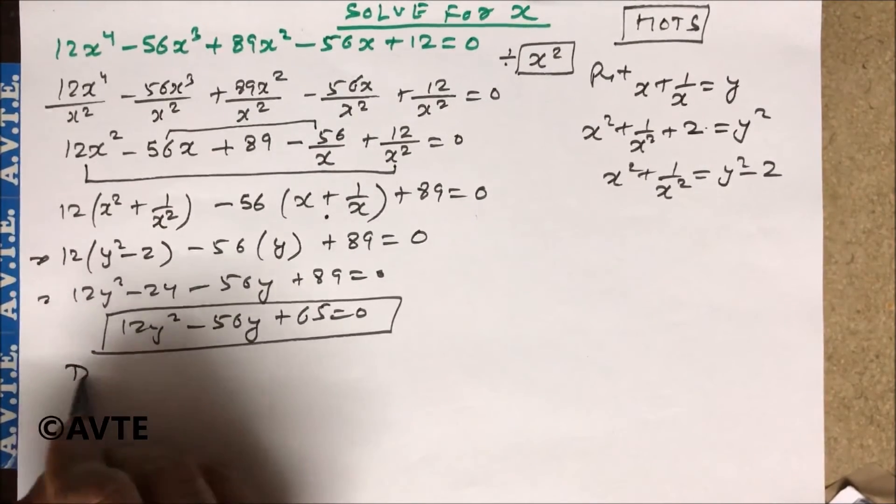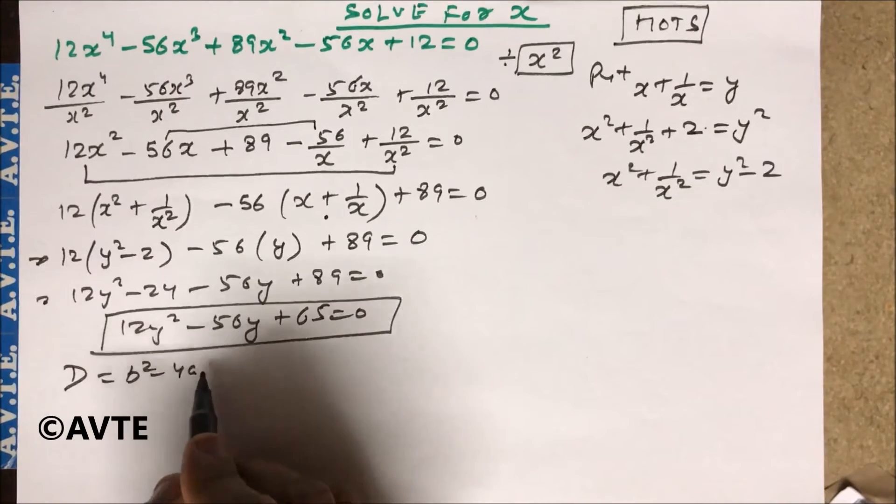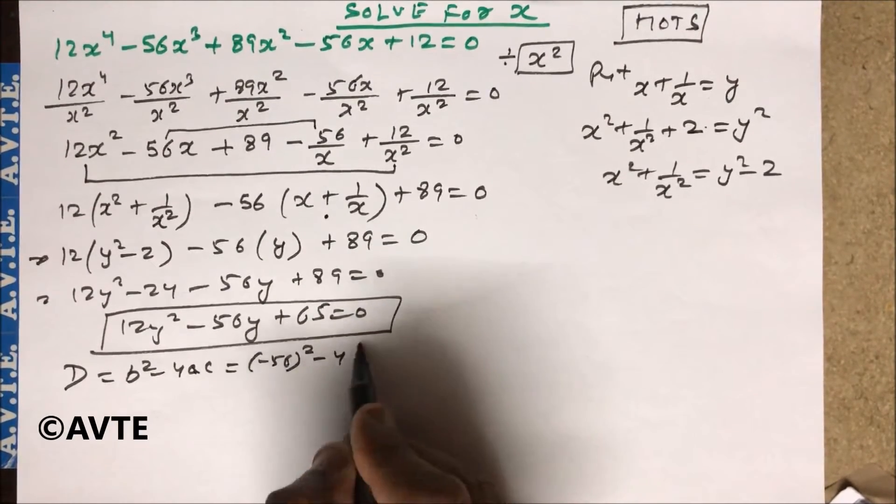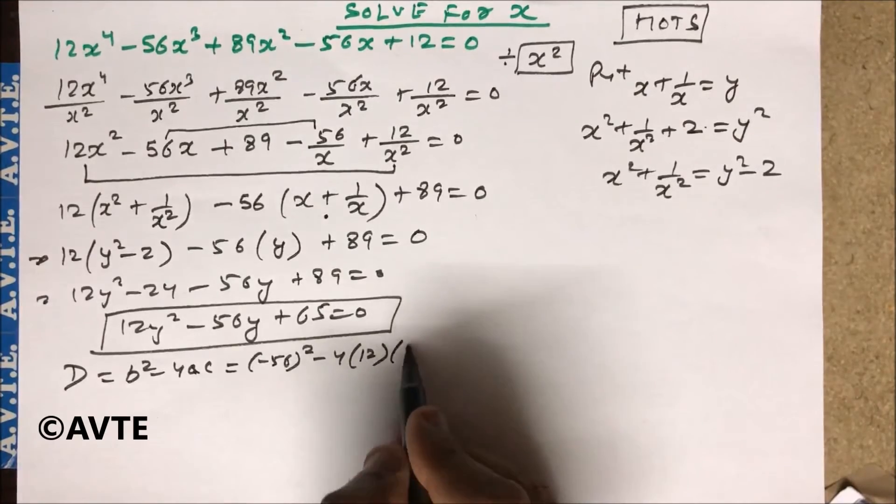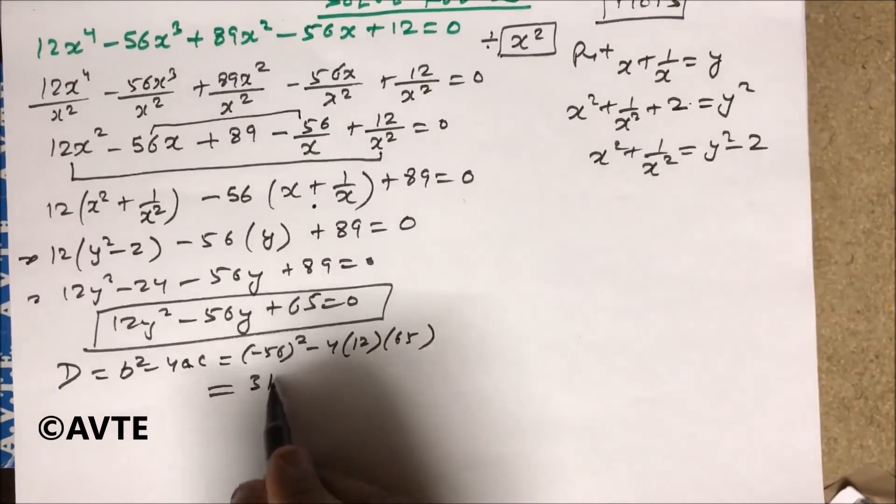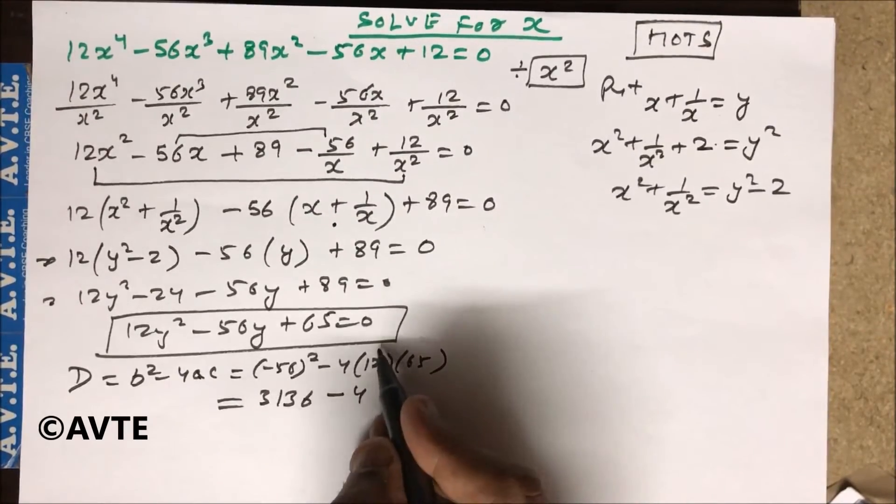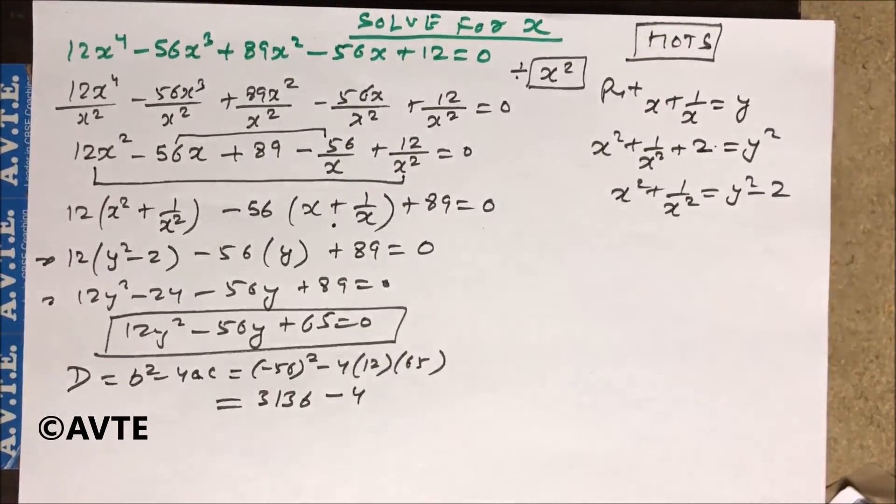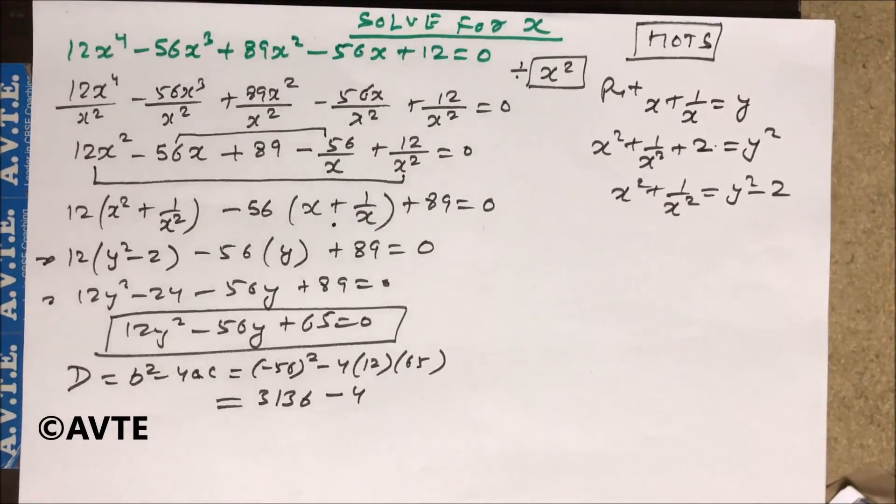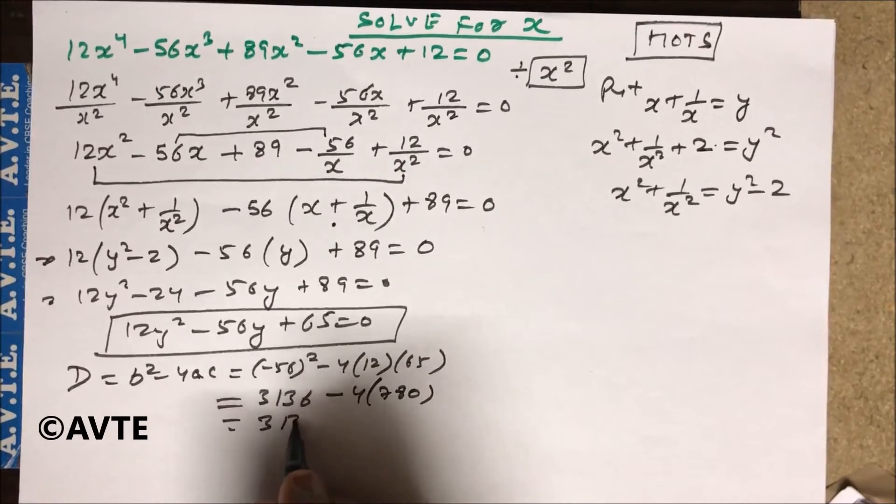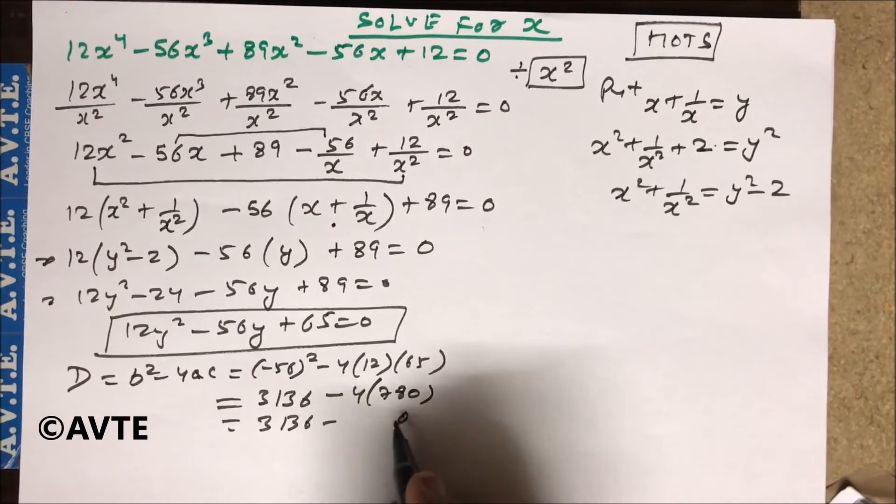So I chose the discriminant b² - 4ac. So this is (-56)² - 4(12)(65). 56 whole square is 3136 minus 12 into 65. 12 into 60 is 720 and 12 into 5 is 60. That is 780 and 780 into 2 is... 3136 minus this is 3120.